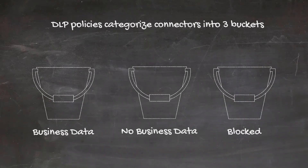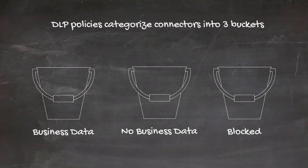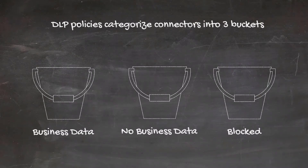What's important is the characteristics of each bucket when a connector is placed in that categorization. Connectors placed in the business data category can be used with other connectors that are also in the business data category. They can't be used, however, with connectors that are in the no business data category. So if I had a CDS connector and a SharePoint connector and they are both in business data, I could build an app or a flow using both. If one of those connectors was in the no business data category, I wouldn't be able to use both at the same time.